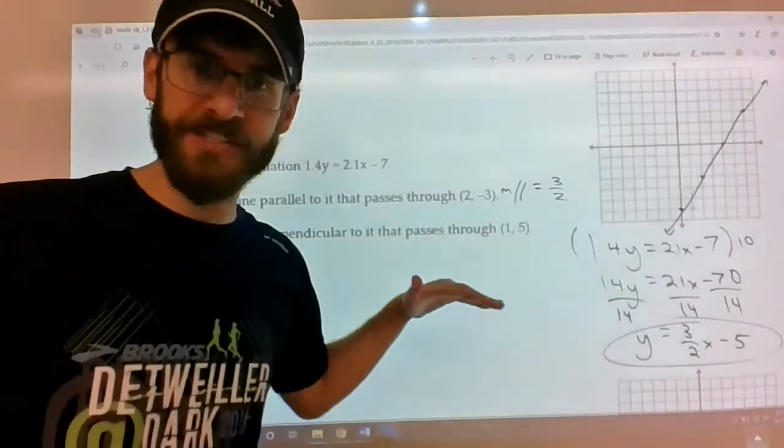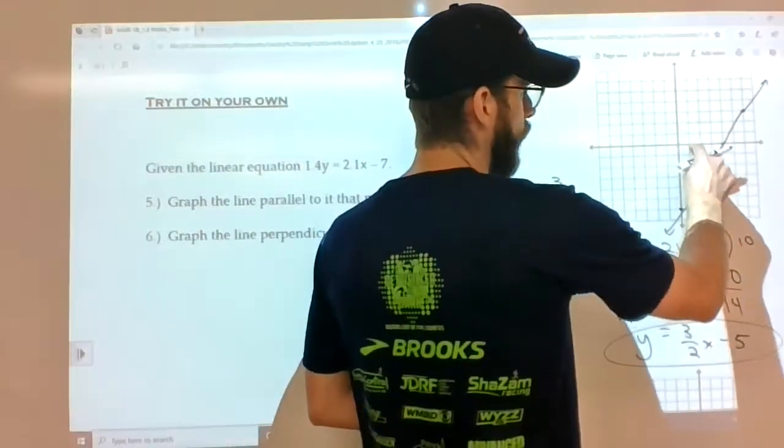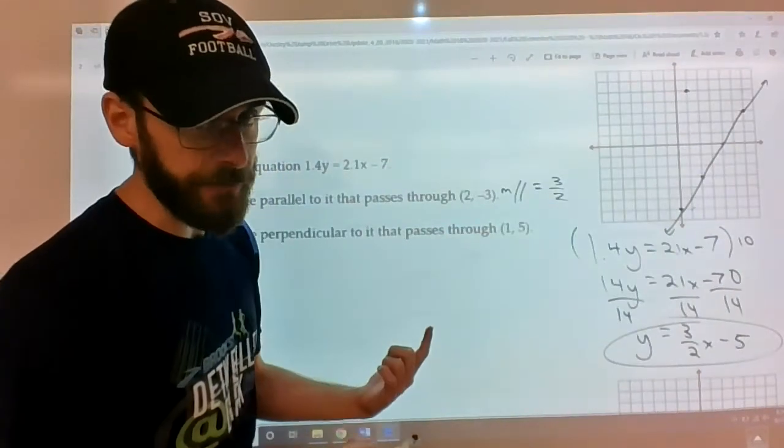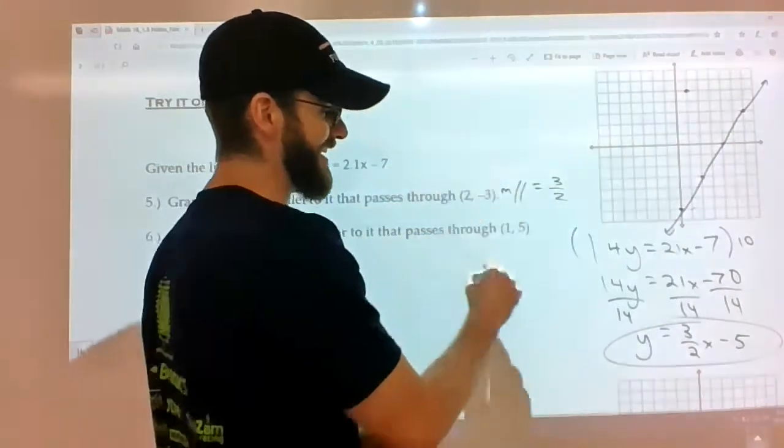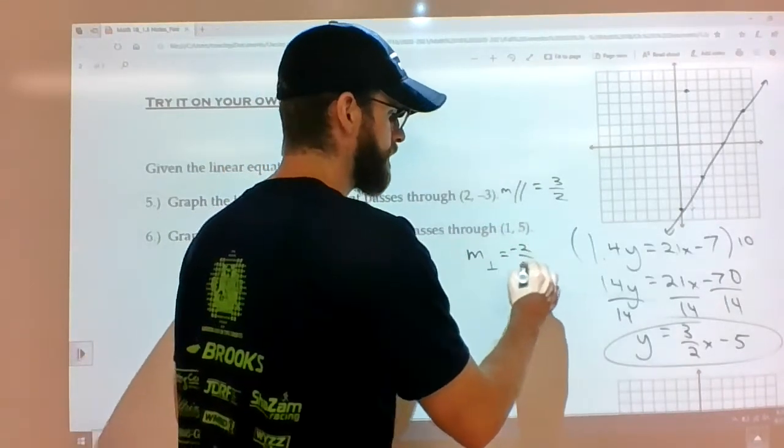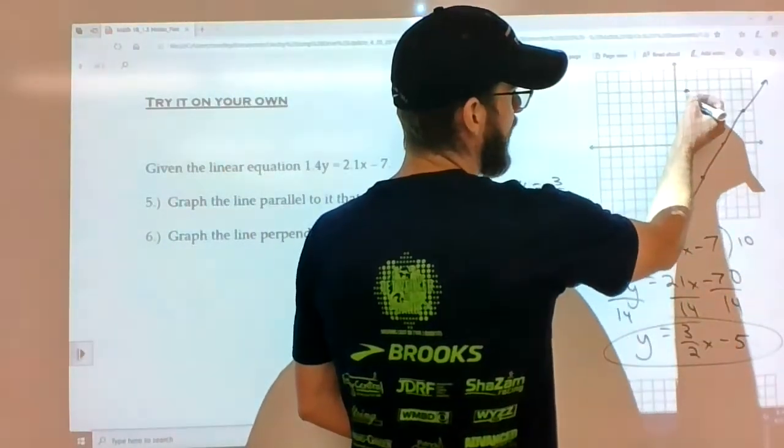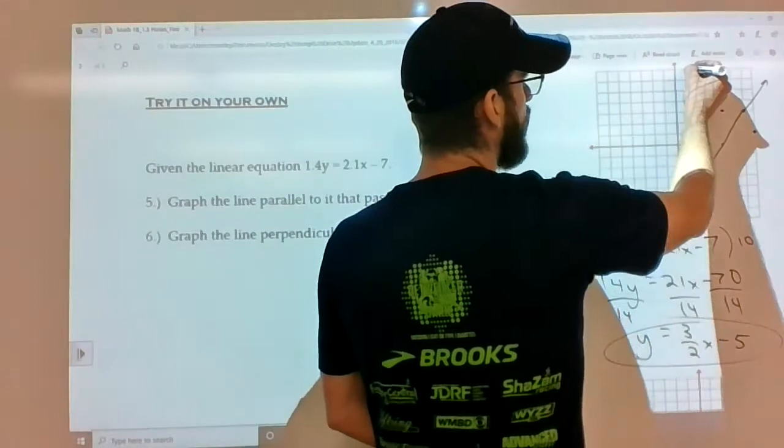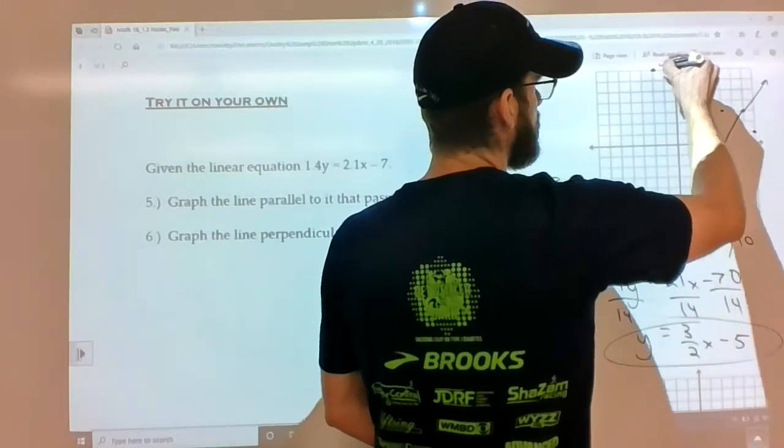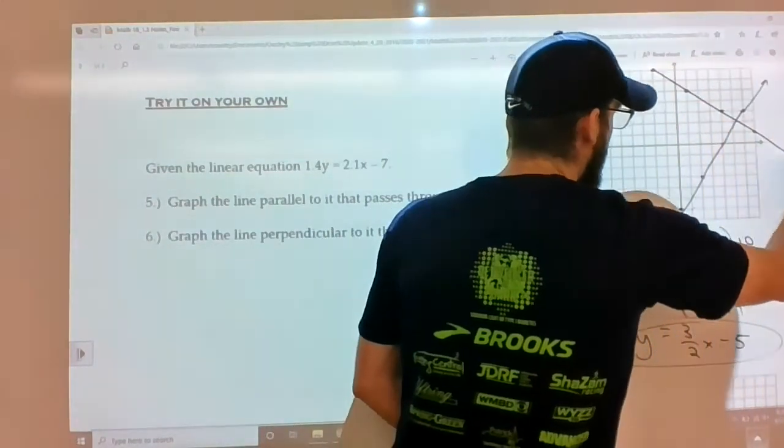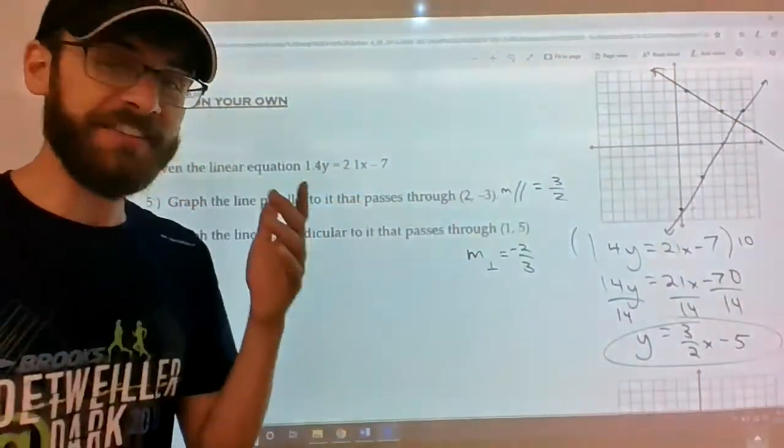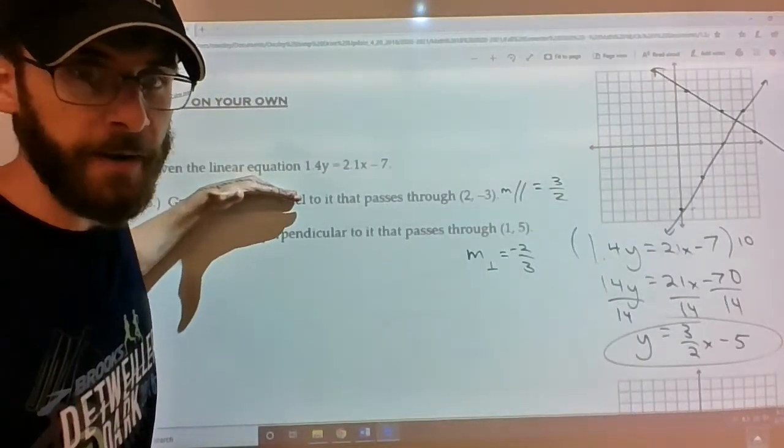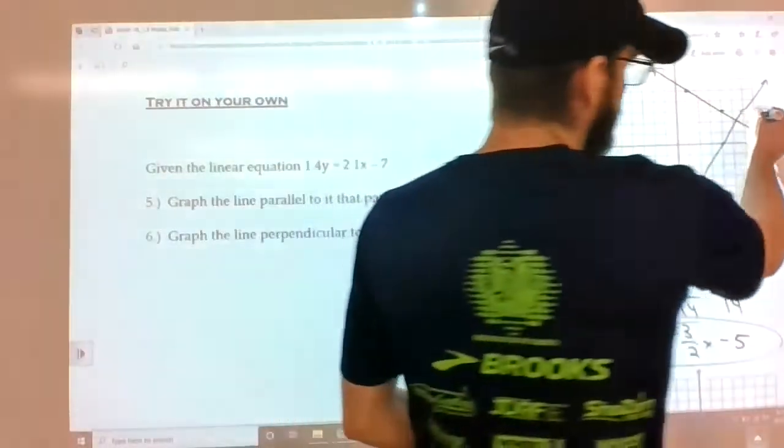Second one. Graph the line perpendicular to it that passes through (1, 5). So 1, 2, 3, 4, 5. Now you're flipping the slope and making it negative. Negative reciprocal. So negative 2/3. So down 2, right 3, down 2, right 3, up 2, left 3. And that's interesting because this line that's perpendicular to the original is also perpendicular to the parallel line. See? Looks like those meet at 90 degrees as well.